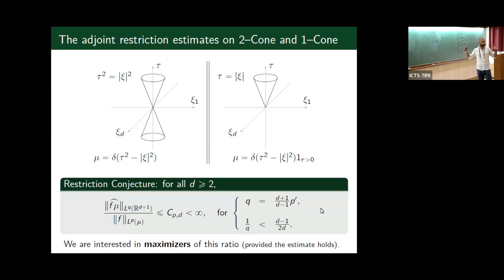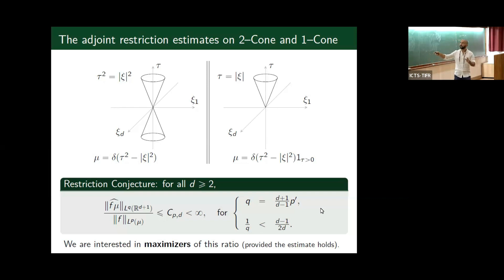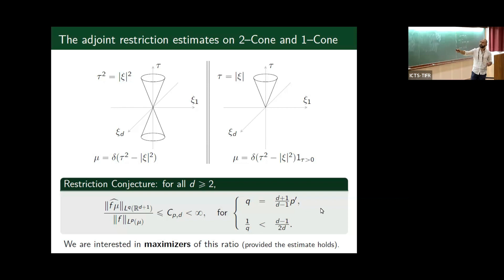All this talk will be about this inequality. This is, of course, a conjectural inequality — the famous restriction conjecture in the case of the cone. In the title I wrote cones, because there are actually two kinds of cones. The natural one is an algebraic surface. I'm using the convention that tau is a real number, a one-dimensional coordinate which we think of as time, and xi is a d-dimensional vector. So tau squared equals mod xi squared is a natural algebraic surface, called a two-sheeted cone.